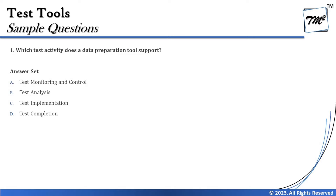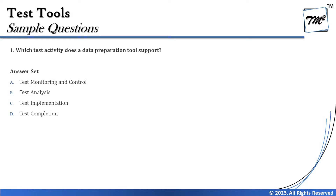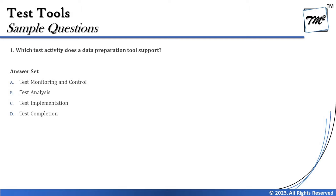Looking at the options: Option A is test monitoring and control — that's the phase for consistent monitoring and taking control actions throughout the lifecycle. Option B is test analysis — that's about reviewing work products and analyzing the test basis, but doesn't involve data preparation. Option C is test implementation — absolutely the phase where test data preparation happens. Option D is test completion — by then the project is completed, lessons learned are gathered.